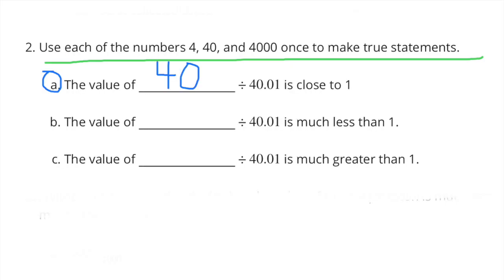A: the value of 40 divided by 40 is close to 1. This is true because the dividend and the divisor are close in value.